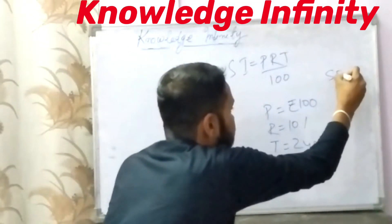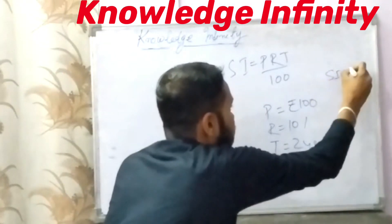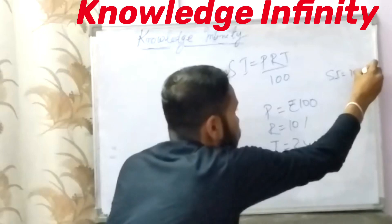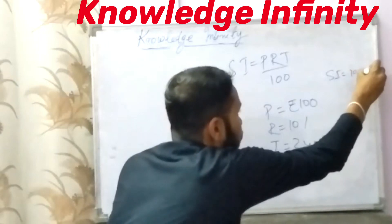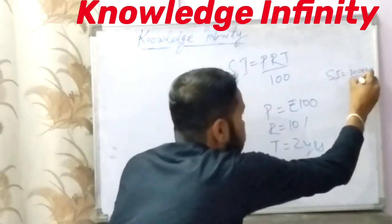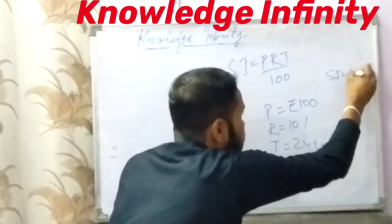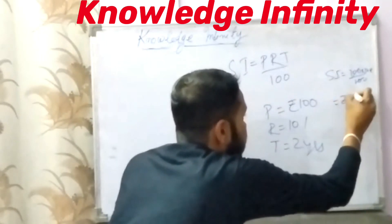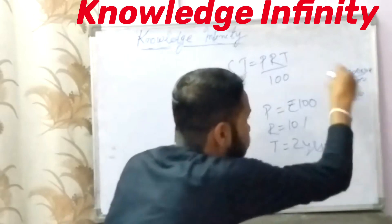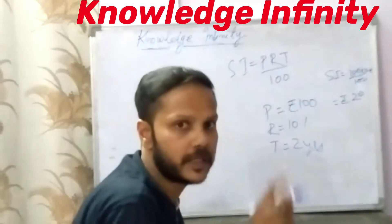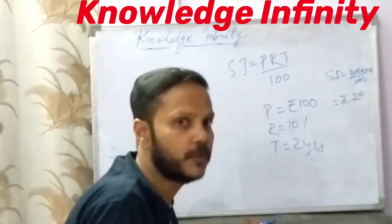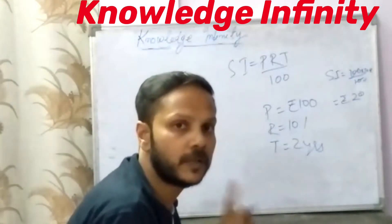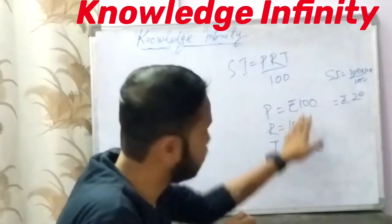Simple interest = P × R × T ÷ 100, which means 100 × 10 × 2 ÷ 100, which comes to rupees 20. So rupees 20 will be the simple interest for this amount for two years. Now let's calculate the compound interest for the same values — 100 rupees, 10 percent, and two years.